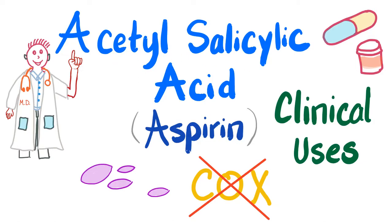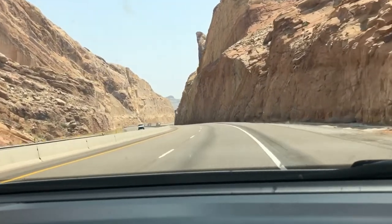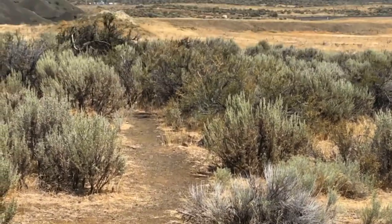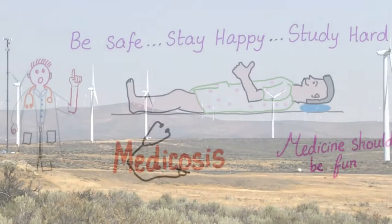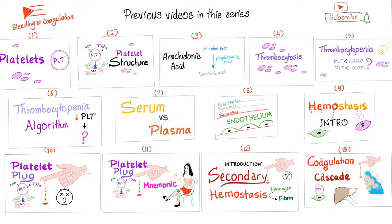Hey guys, it's Medicosis Perfectionalis, continuing our series about bleeding and coagulation. In the previous video, we started talking about acetyl salicylic acid. Today, we'll talk about the medical or clinical uses, also known as indications of acetyl salicylic acid — the wonder drug. It's part of my series about bleeding and coagulation. Please watch these videos, especially the arachidonic acid pathway, because aspirin is all about inhibiting the cyclooxygenase in the arachidonic acid pathway.